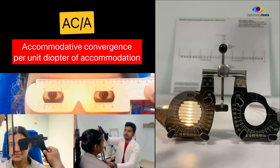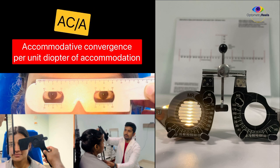As we know, accommodation and convergence are interrelated and they develop together so that we see a single image. Accommodative convergence is the convergence which occurs when the eyes accommodate. Therefore, the ratio of accommodative convergence over accommodation indicates the relationship between the stimulus of convergence and the amount of accommodation which produces that convergence.